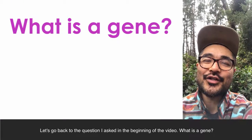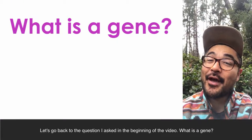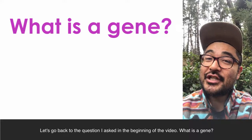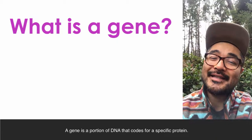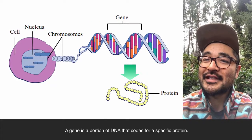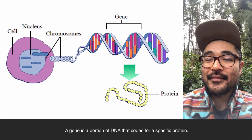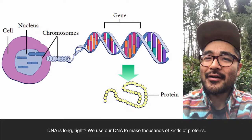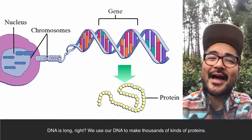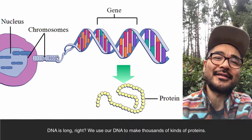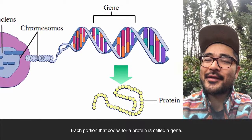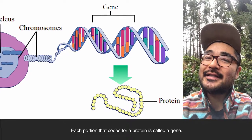Let's go back to the question I asked in the beginning of the video: what is a gene? A gene is a portion of DNA that calls for a specific protein. DNA is long, and we use our DNA to make thousands of kinds of proteins. Each portion that calls for a protein is called a gene.